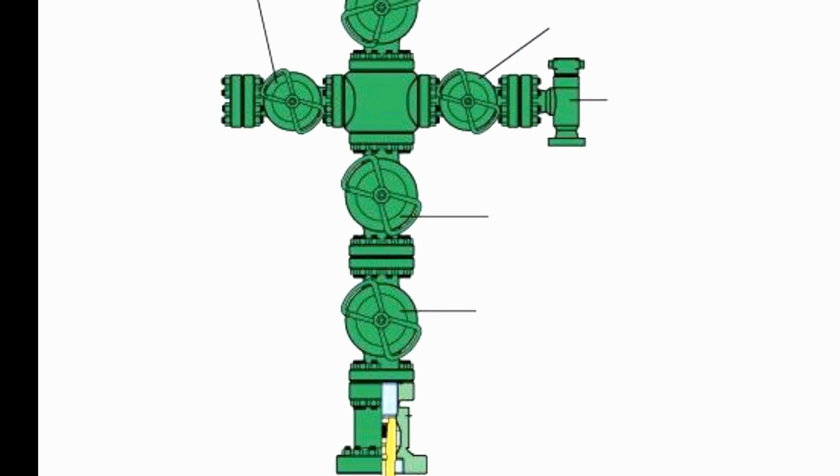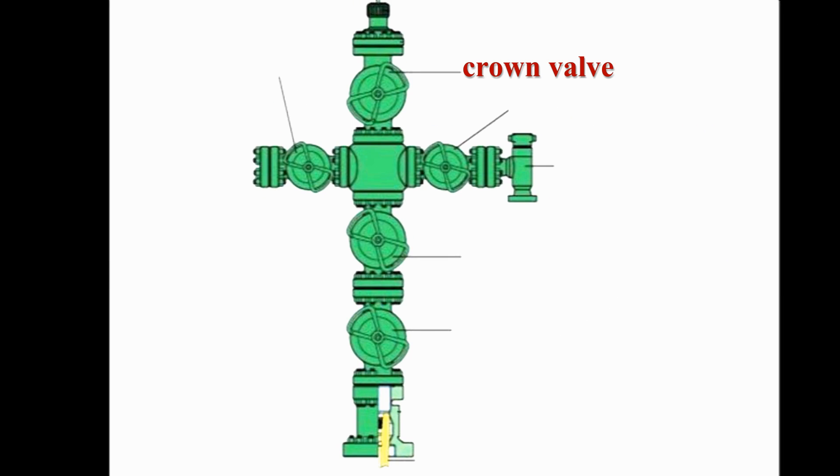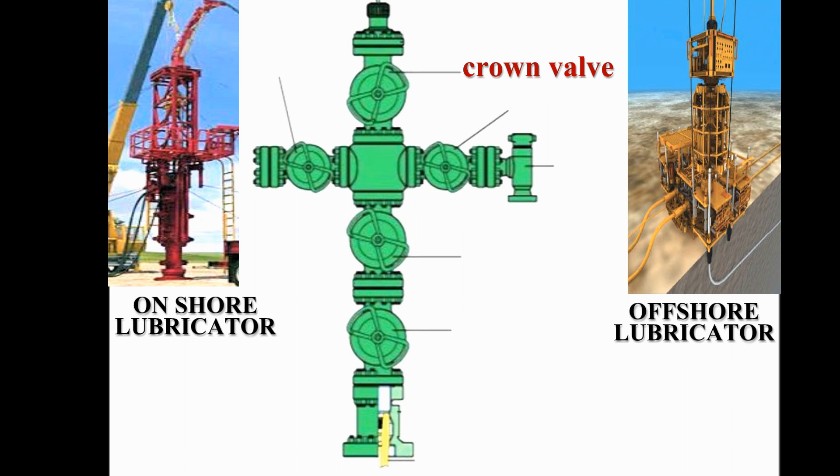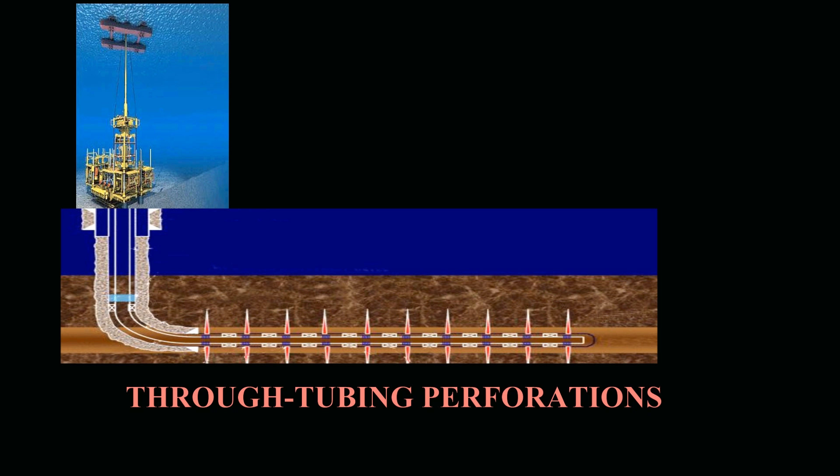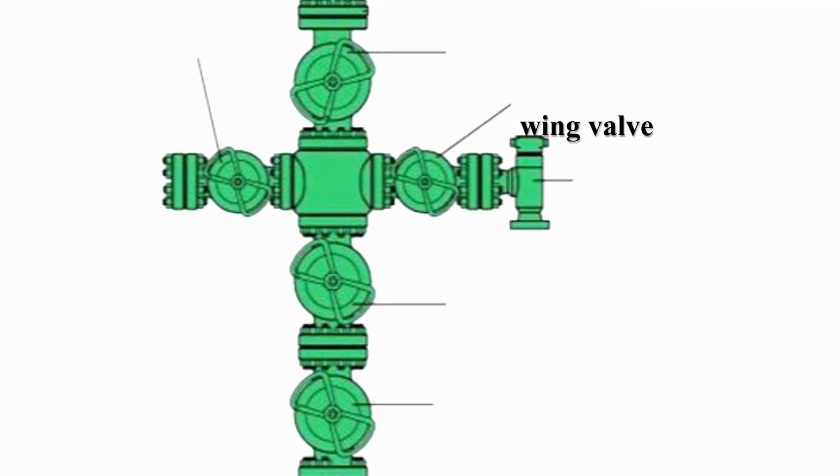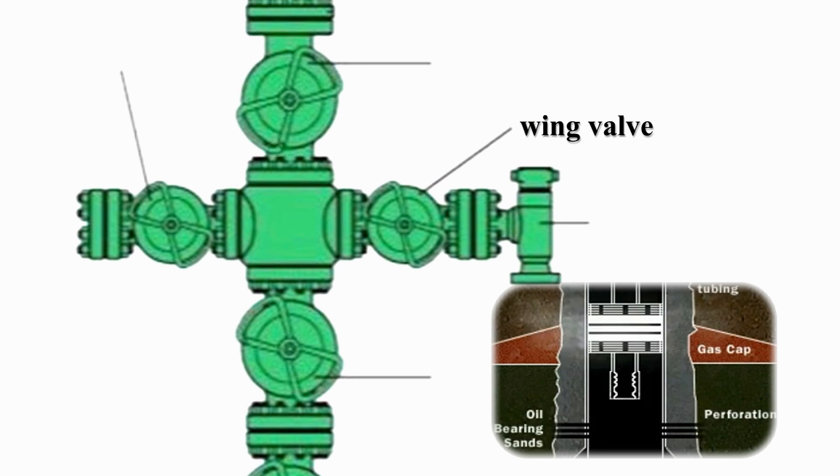Next, the crown or lubricator valve is used when the lubricator is attached. It is used when well-serviced tool operations are being conducted, such as through-tubing perforations. The wing valve is normally used for the routine opening and closing of the well.